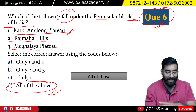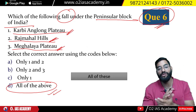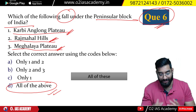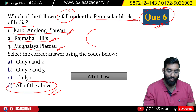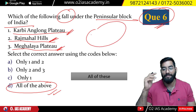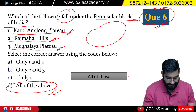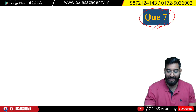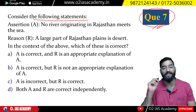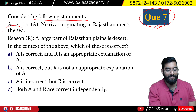The answer is: Karbi Anglong, Rajmahal Hills, and Meghalaya Plateau — all three of them are part of your peninsular block. Most of this portion is in India.